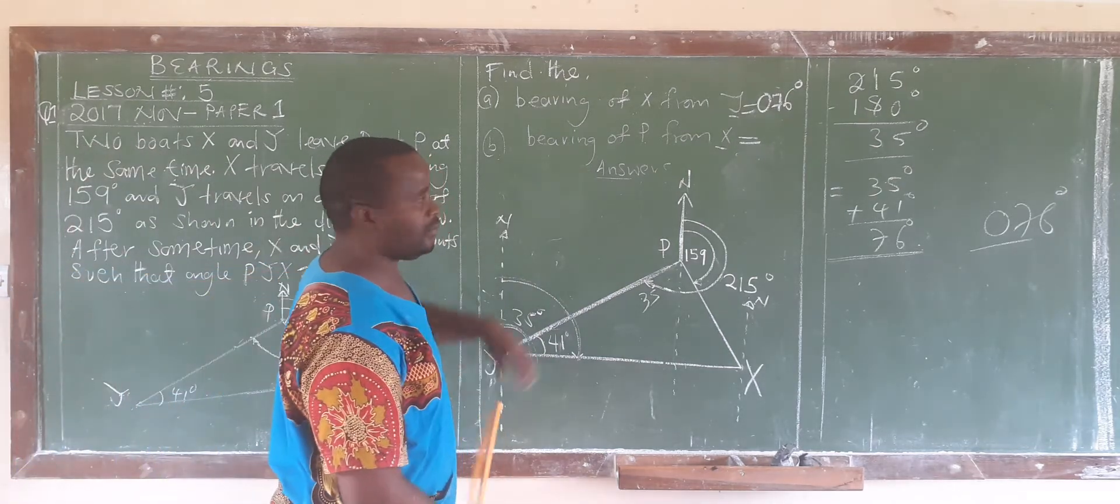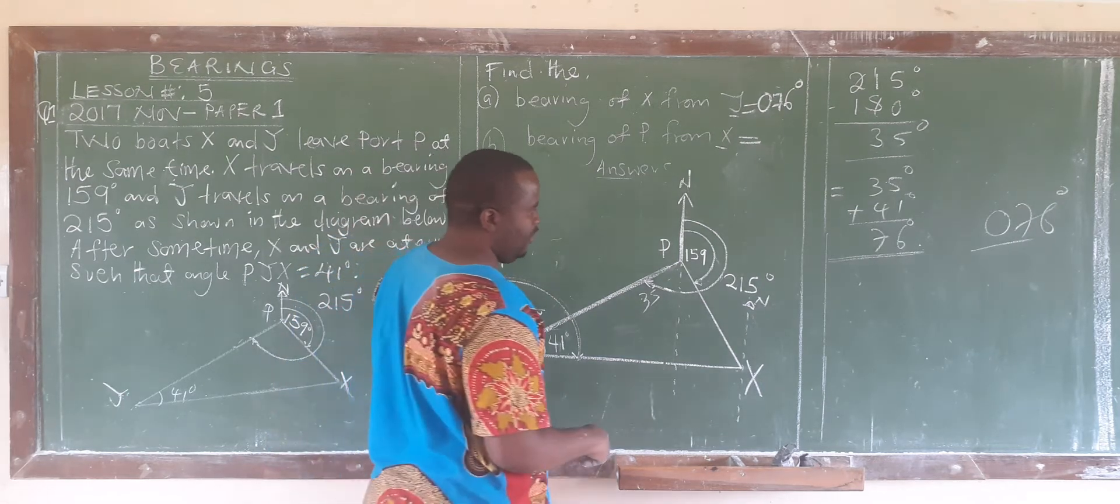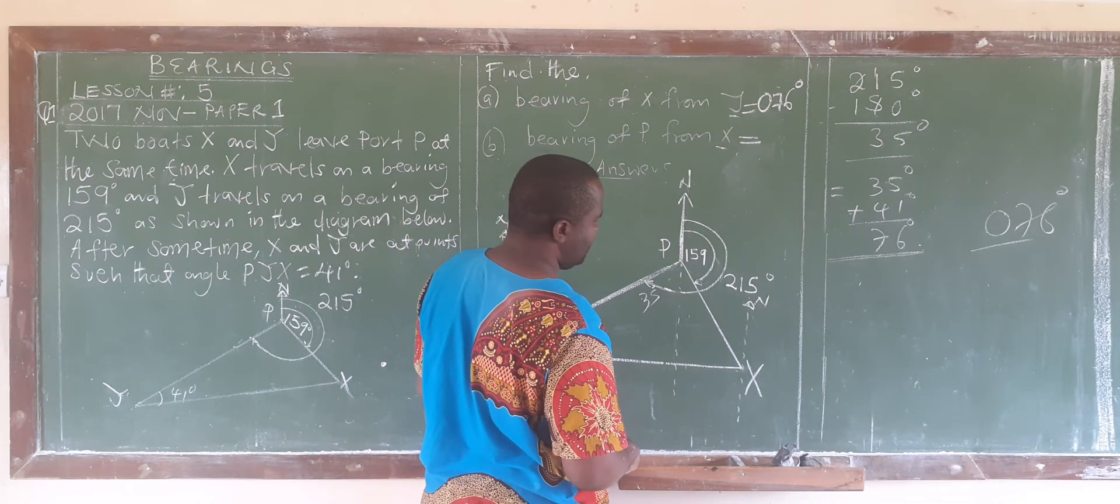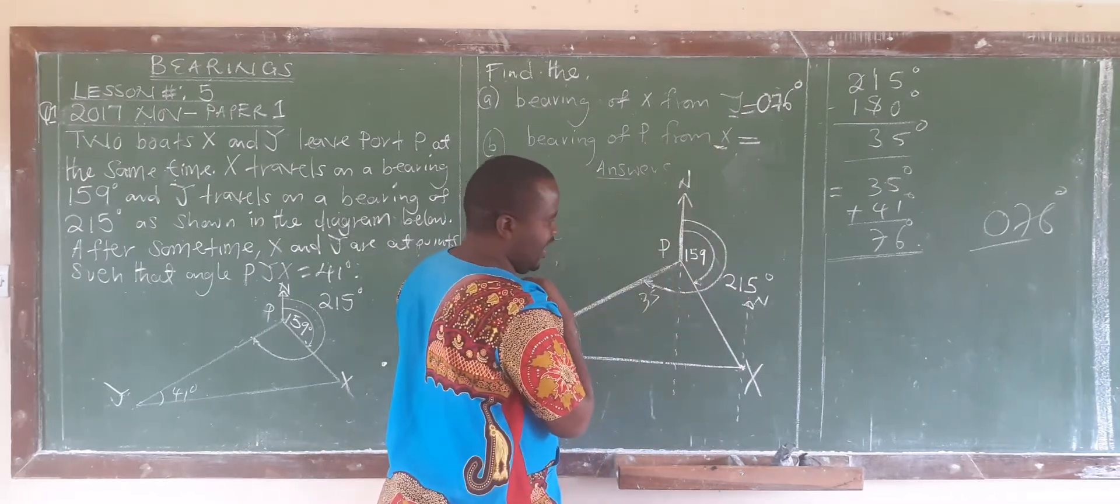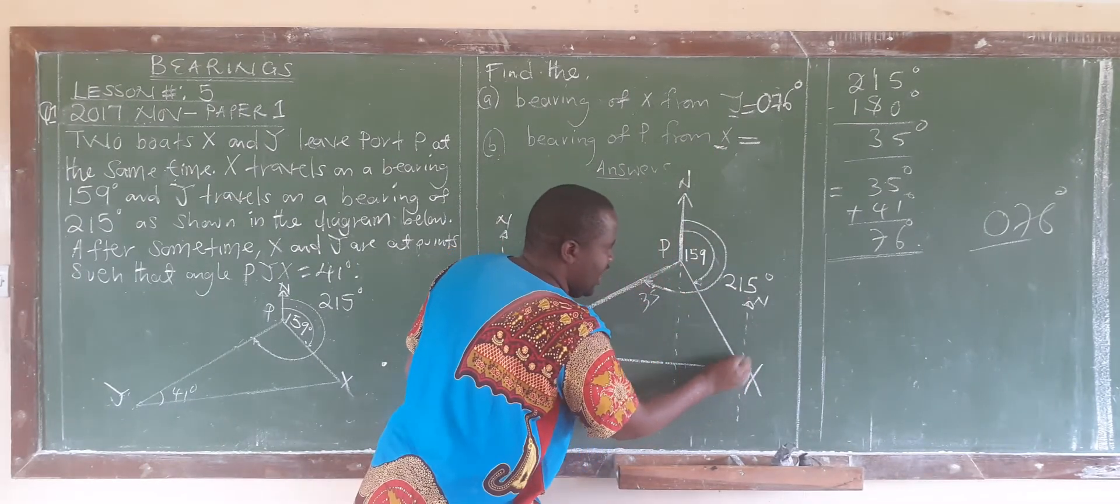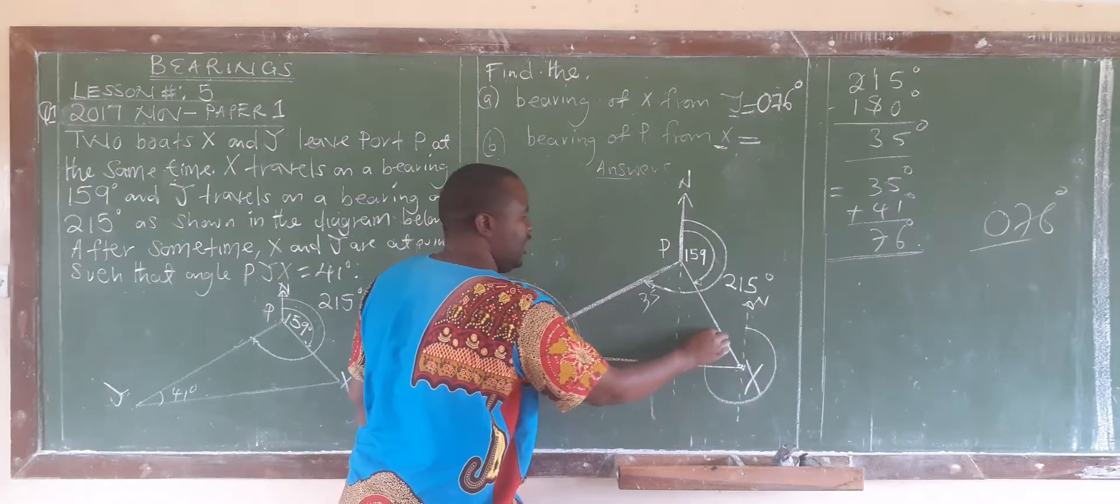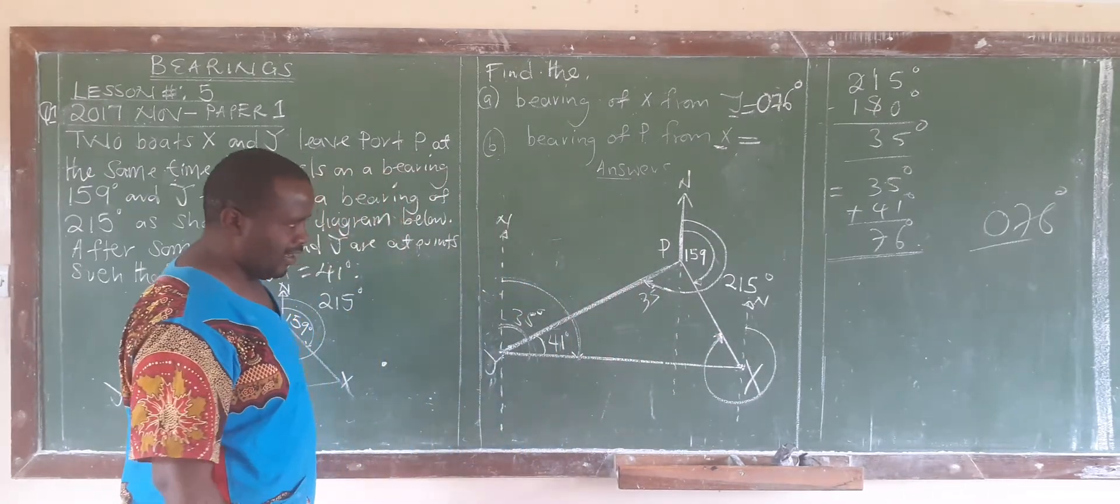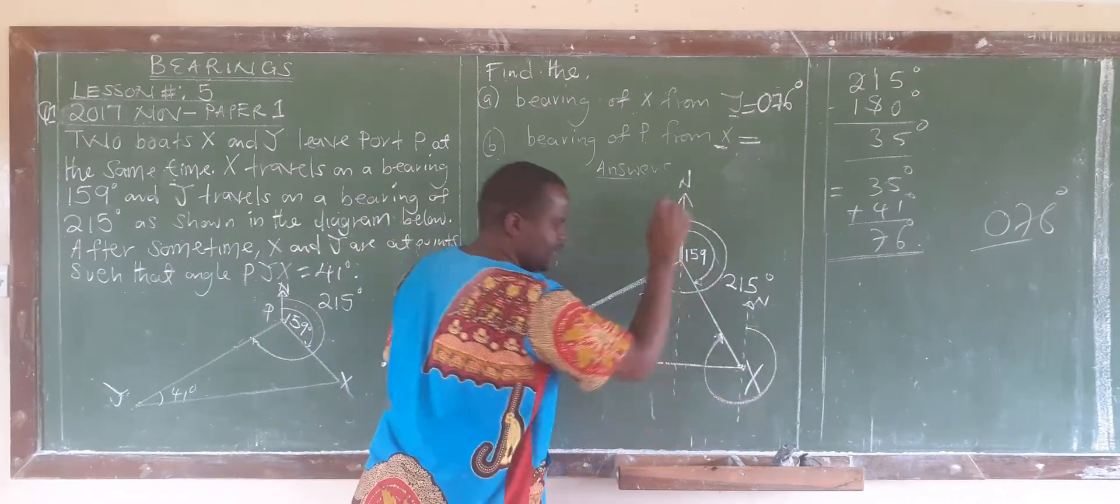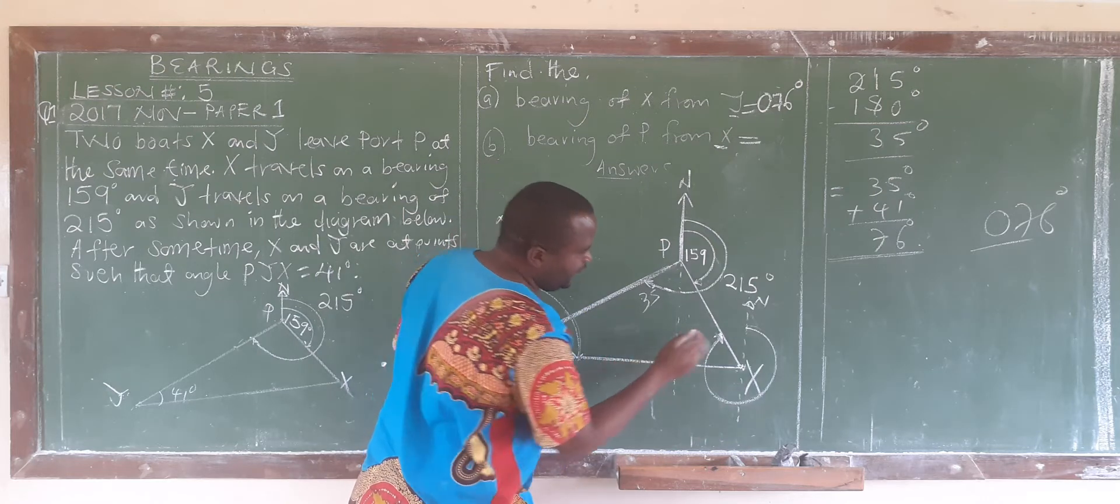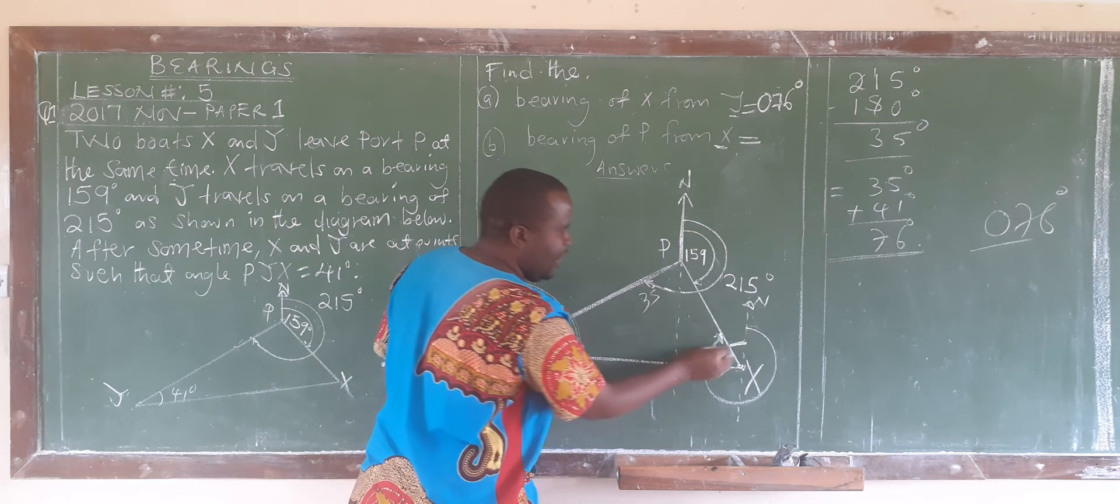Then we go to the second one. The bearing of P from X. So our reference point here is X. This is our reference point, and we have created our north pole. You must move from the north pole in a clockwise direction until we meet the line. That's the bearing that we want to find. Now, how can we get this? If we knew this angle, then we would say 360 minus it.